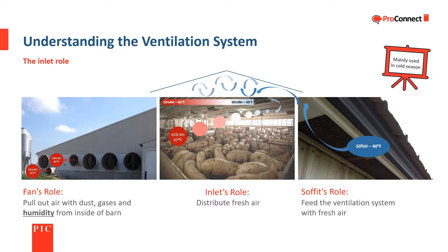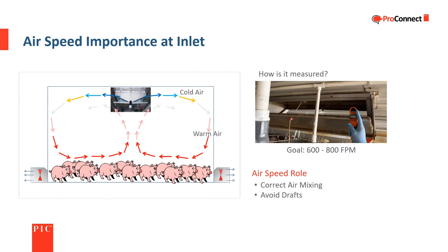Inlets should evenly distribute fresh air to the pigs. The speed of the air passing through the inlet needs to be correct to ensure the cool air entering mixes correctly with the warm air in the room. The goal for inlet air speed is 600 to 800 feet per minute to ensure correct mixing before the air reaches the pig level and to avoid drafts that can chill the pigs.